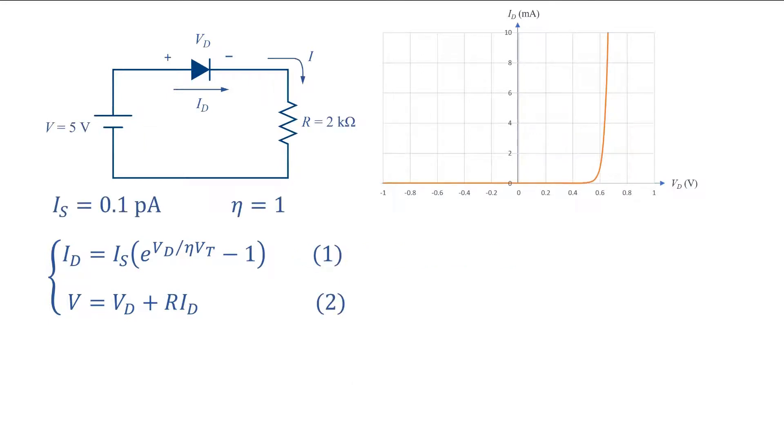As its name implies, we try a value for id or vd, just a guess. Use it in one of the equations and find the second parameter. Use the calculated parameter in the second equation to find the first parameter. Now we can compare the calculated value with our initial guess to see how different they are. Based on this difference or error, we adjust our guess and repeat the procedure until the error becomes very small.